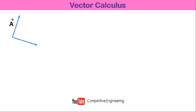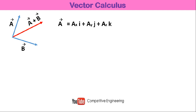A vector A can be represented as Ax·i + Ay·j + Az·k. If there is another vector B, we can write B as Bx·i + By·j + Bz·k. The sum of vectors A and B is vector A plus vector B.